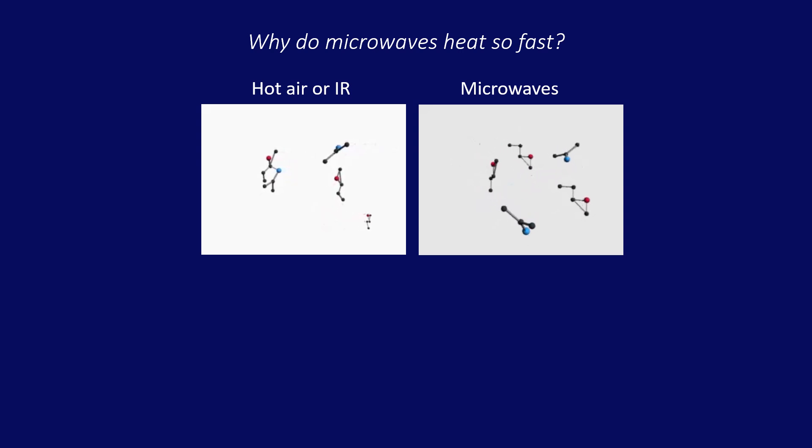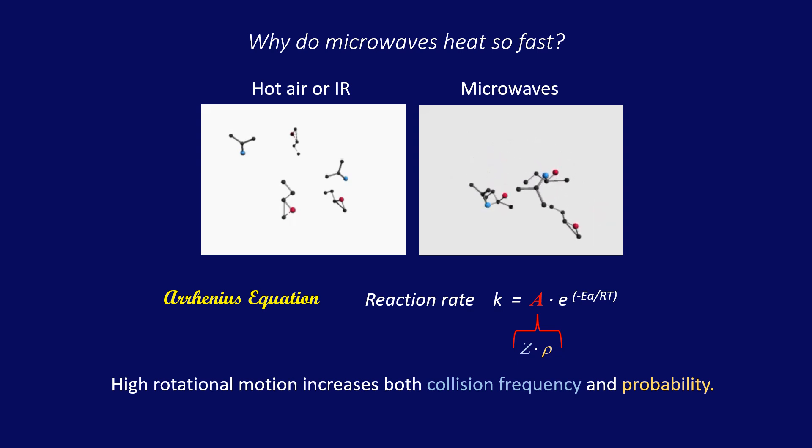If we look at the classic Arrhenius rate equation, the pre-exponential factor A is a constant for any one chemical reaction. But if we look closer, A is really a combination of the collision frequency and the form factor. Since there are more collisions in a microwave field, and the probability is higher that a collision will be at just the right form to react, then we now see why microwaves are always thought of as heating faster. It's just basic kinetics. So that explains speed.